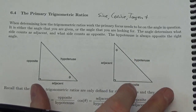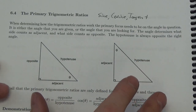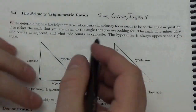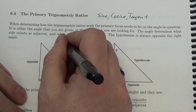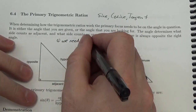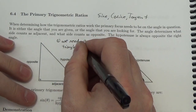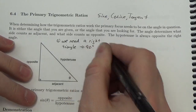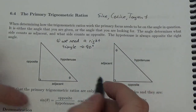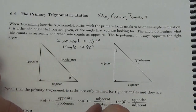When it comes to using trigonometry to solve for missing information in a triangle, first thing we need is a right triangle. We need to identify that 90 degrees, which is going to help us identify the hypotenuse, because it's going to be opposite the 90 degrees.